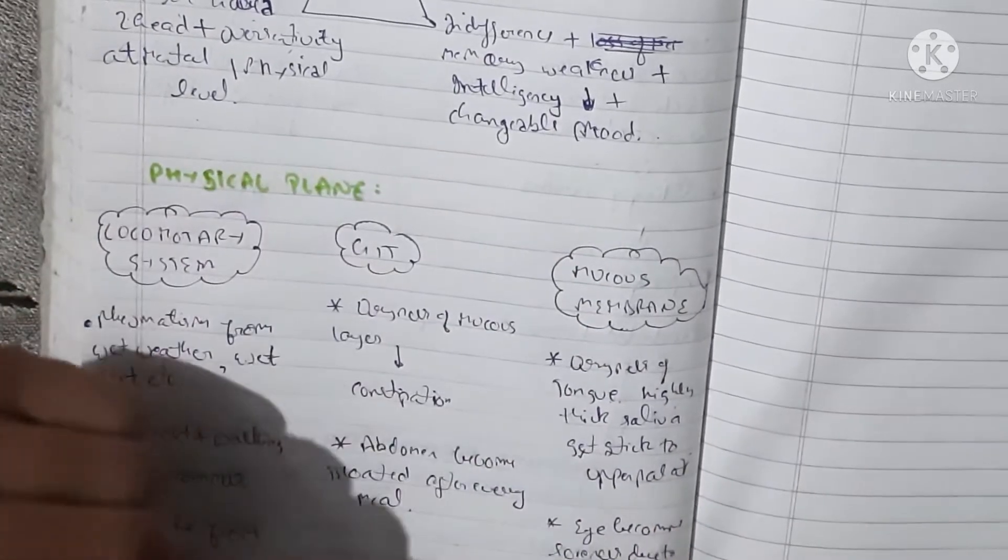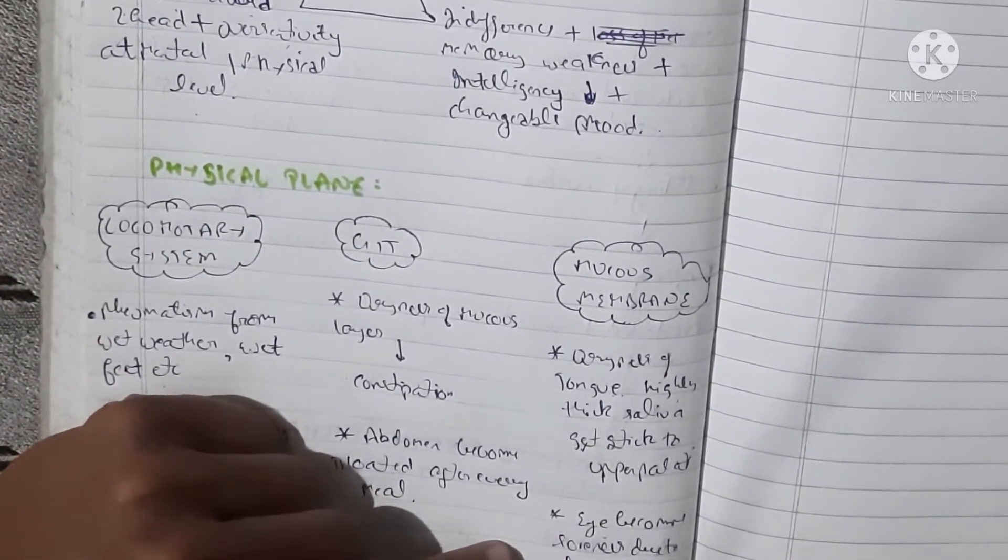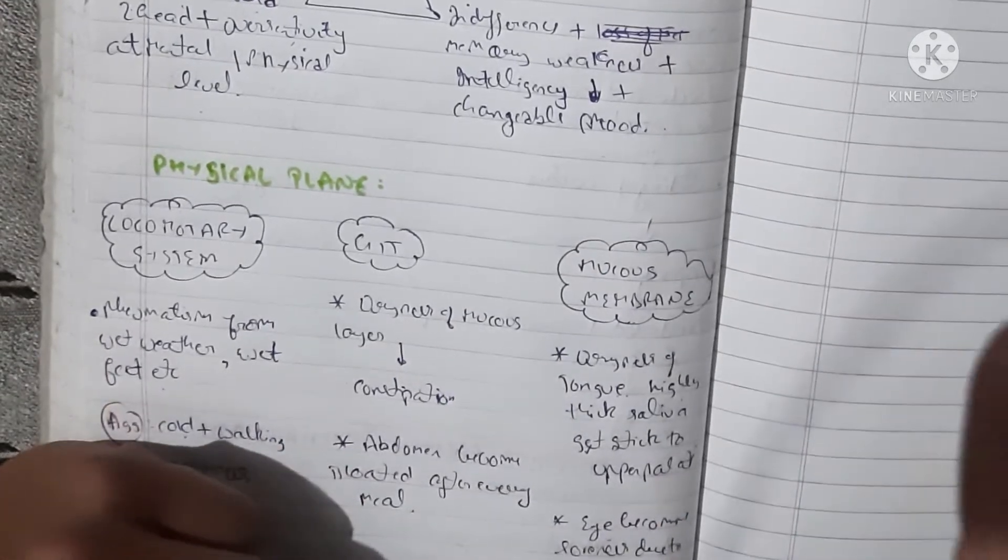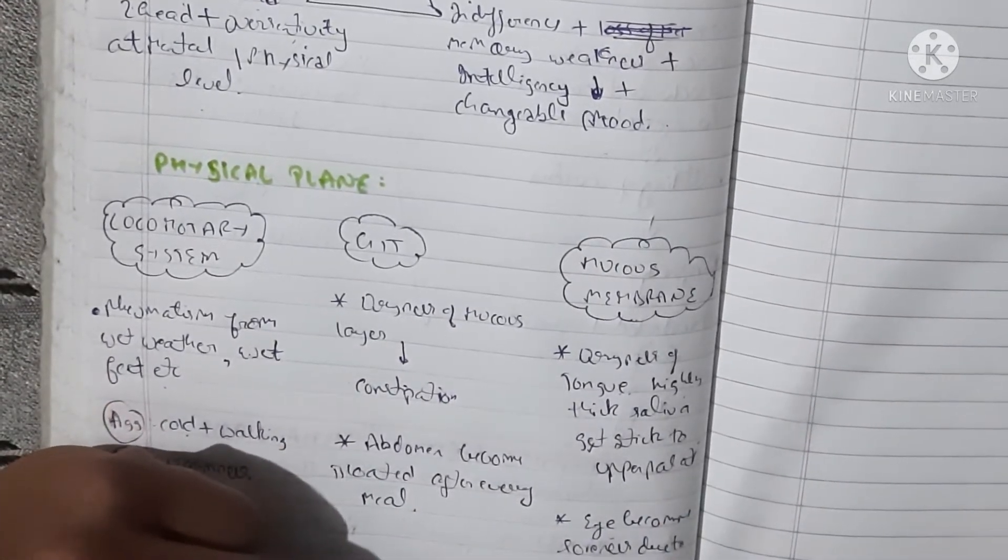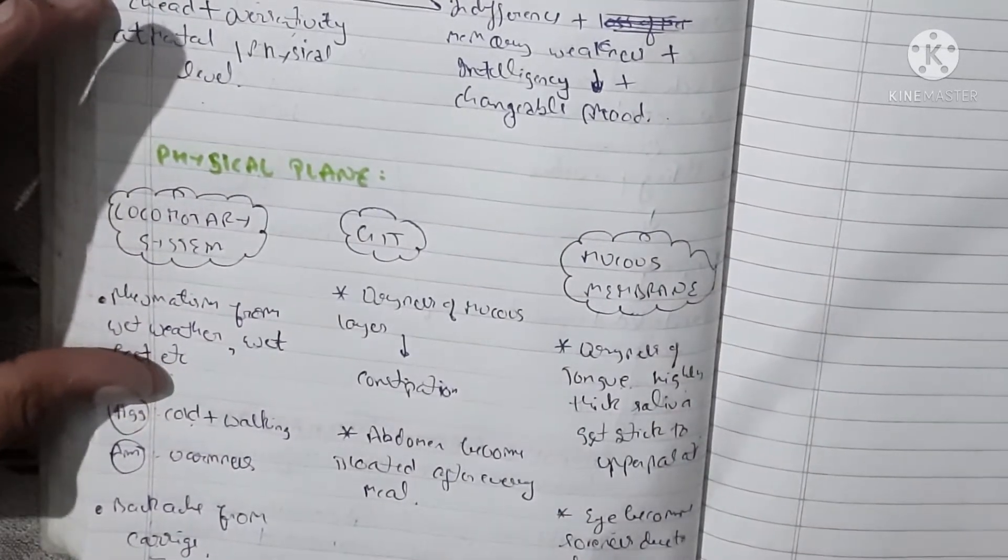This is one symptom. And the other one is our eyes become sore due to dryness, and due to this dryness our eyelids also have soreness. This is our physical plane.